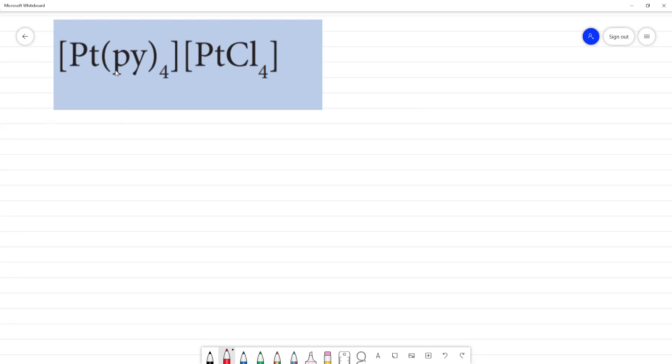We are going to name this complex. It is called anion complex and cation complex. So this is the end of platinum. What is the first end of platinum? That is cation. First end of platinum is cation.